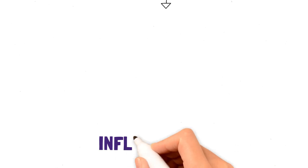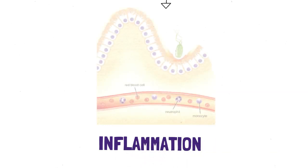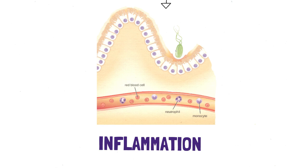H. pylori in this case is an invader, so chronic H. pylori infection will cause inflammation of the gastric mucosa. You will find a prominent number of neutrophil infiltrates in these inflamed areas. To fight this infection, the stomach will try more and more to fight it by recruiting more white blood cells.